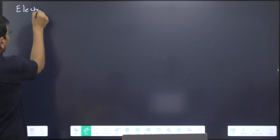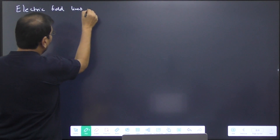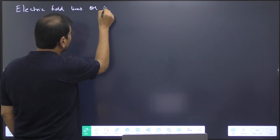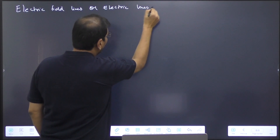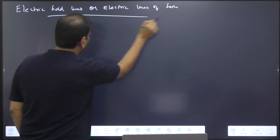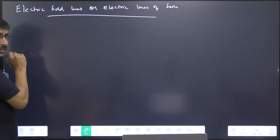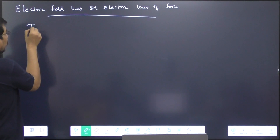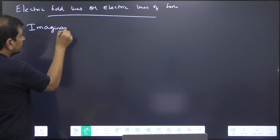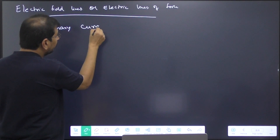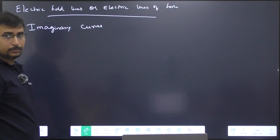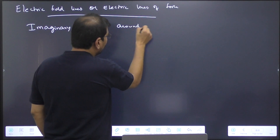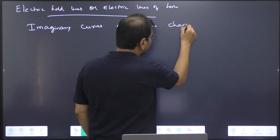Let us discuss the concept of electric field lines or electric lines of force. Can you tell me what these electric field lines are? Are they real? No, they are imaginary. They are imaginary lines or imaginary curves. Just because we use the word 'lines' does not mean they are lines — they are actually curves. They are imaginary curves around the charge distribution.